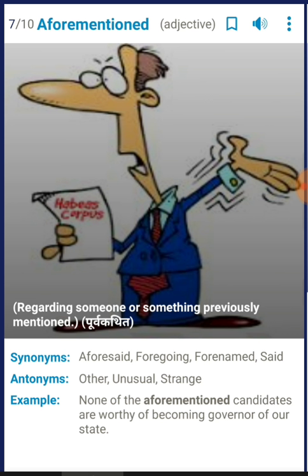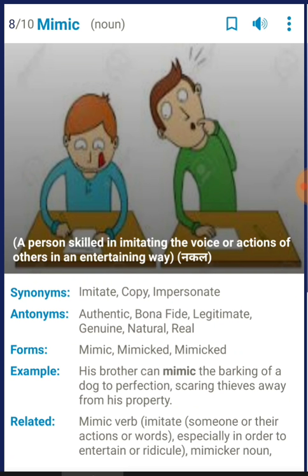The next word is 'aforementioned'. It means regarding someone or something previously mentioned. Synonyms: foregoing, forenamed, previously said. The things which are already said and the same thing happens in the present — you can use 'aforementioned' for that. For example: 'None of the aforementioned candidates are worthy of becoming governor of the state.'